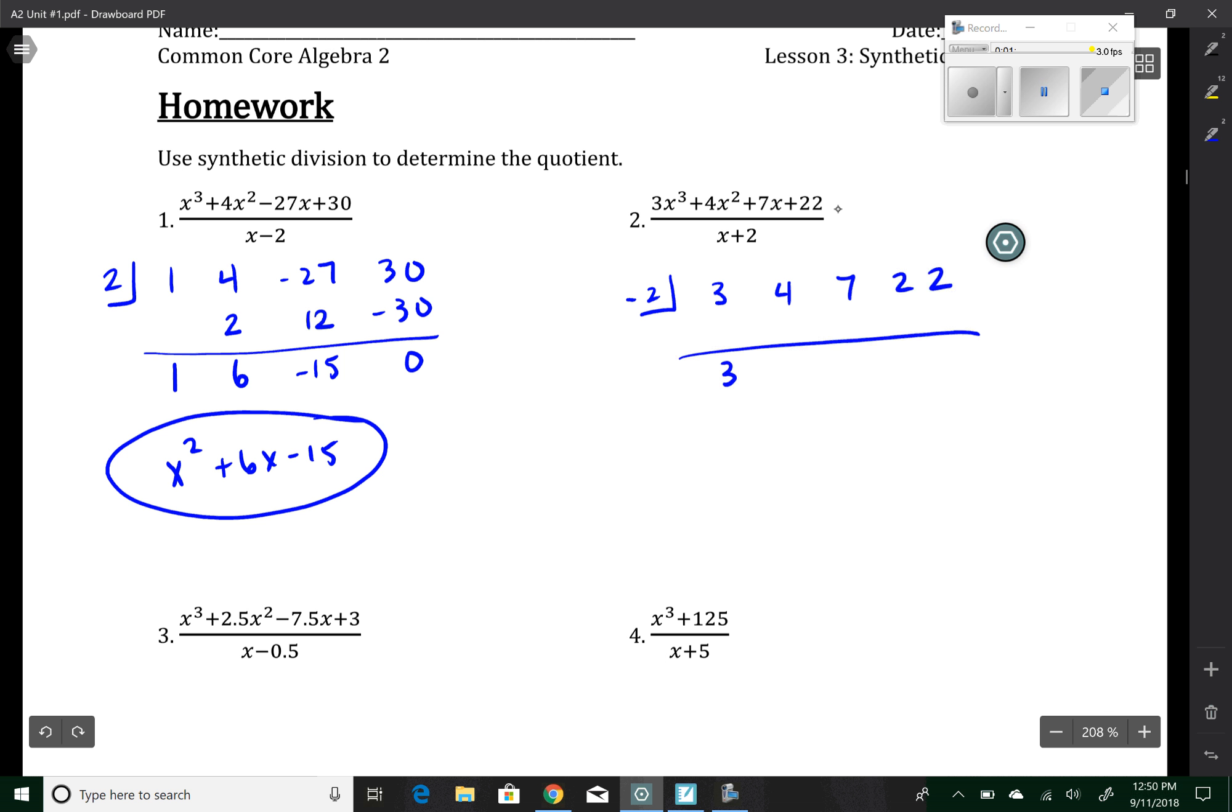Three comes down, negative two times three is negative six. That makes four, and that makes negative 22. I'm just doing my repeated process over and over again. So then I have 3x squared minus 2x plus 11.